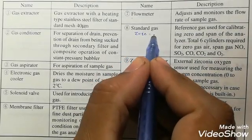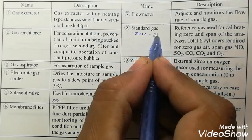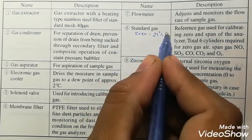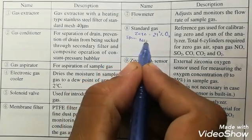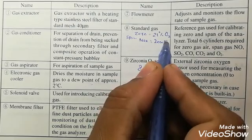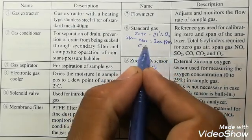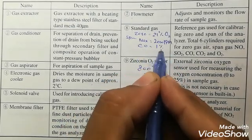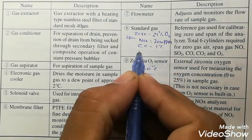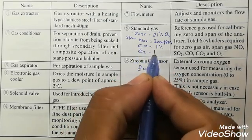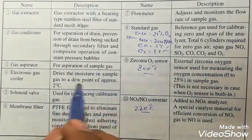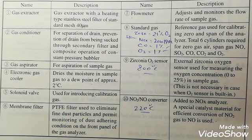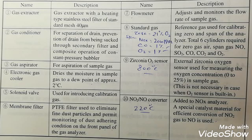Standard gases: for zero, we are using 21% oxygen for zero of all gases. For span, we are using NOx 2000 ppm, CO 1%, and O2 1%. So these are our standard gases we are using for the calibration purpose in this Fuji model. This is the main function of all these parts.